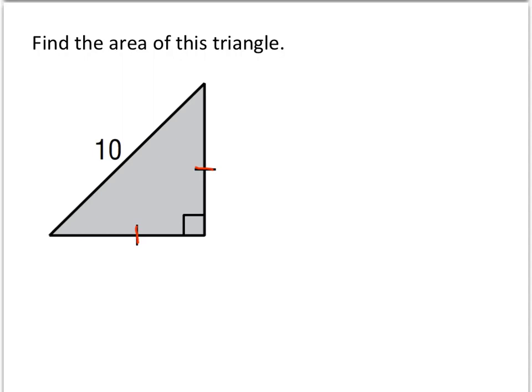And remember, right isosceles triangles are 45-45-90 triangles. And so if the hypotenuse is 10, that means 10 is equal to the n root 2 side. And so that means n must equal 5 root 2.